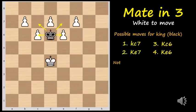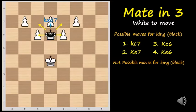Now take a look at the moves that are not possible for black king. We have king takes d7, king c5, king d5, and king e5.